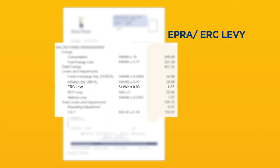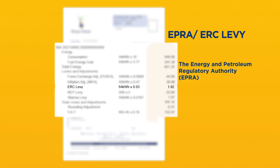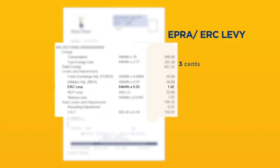EPRA. ERC levy. This levy is passed on to the Energy and Petroleum Regulatory Authority, EPRA, the regulatory arm of the energy sector. It is currently set at 3 cents per kilowatt hour.